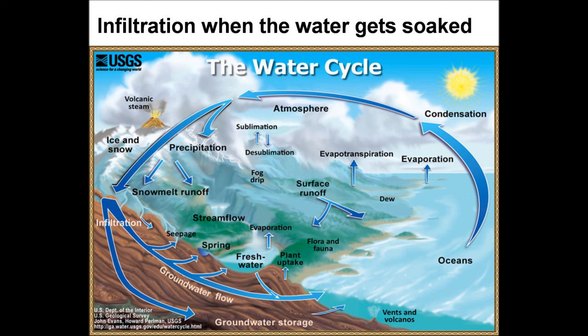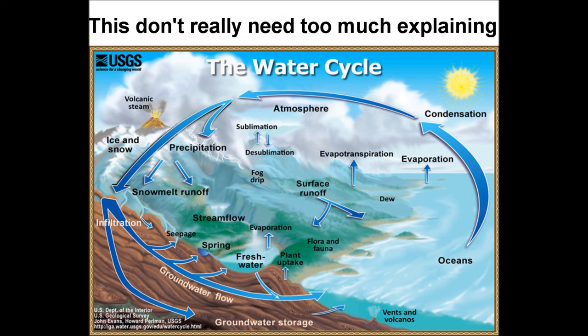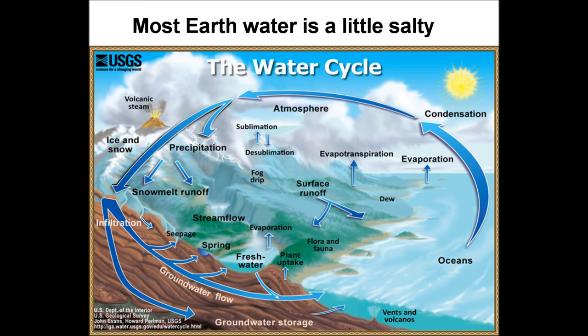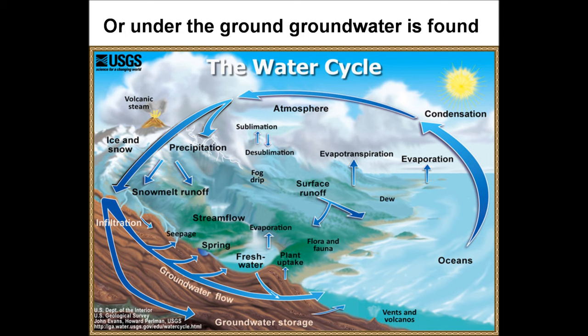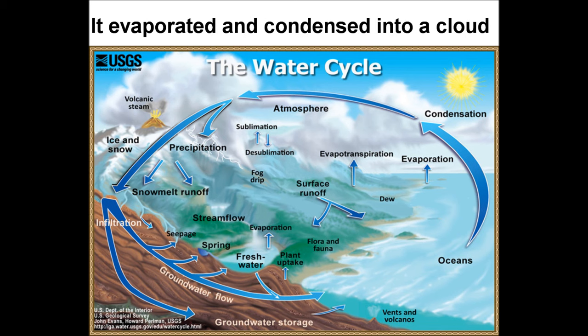Infiltration — when the water gets soaked into the ground to help plants grow. This don't really need too much explainin', so I guess I can stop. Most earth water is a little salty — 3% really fresh, like me, in ice caps and glaciers or under the ground. Groundwater is found.